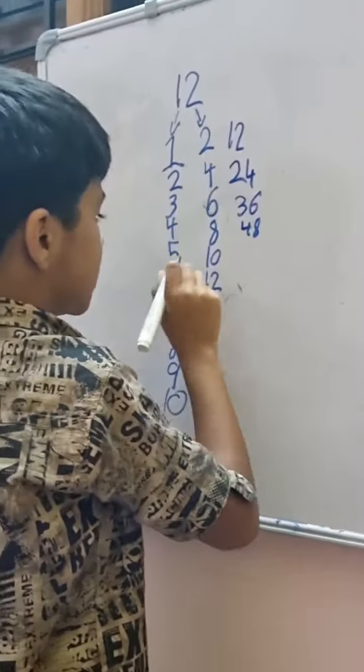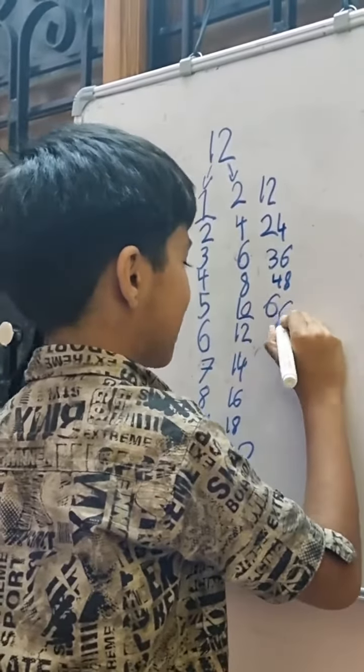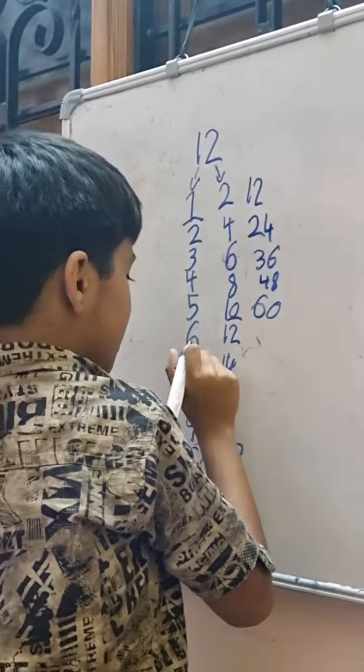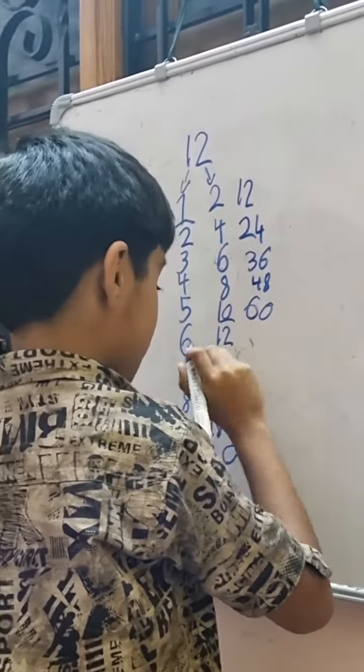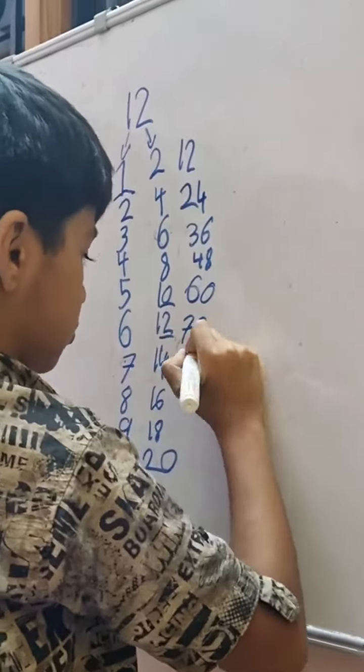Now, 5 plus 1 equals 6, and 0 is left, so we'll write 60. 6 plus 1 equals 7, and 2 is left, so we'll write 72.